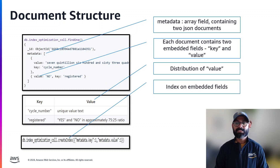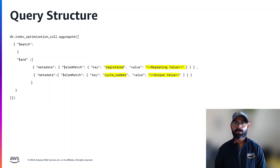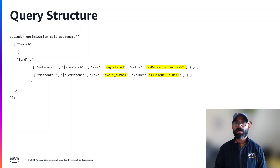We have created a compound index on the embedded fields. This is the query structure we are looking at — we need to find documents that match two conditions with the AND operator. We have also used $elemMatch because we need it to query embedded fields. When we are using 'registered', the value is a repeating value. However, when we use 'cycle number', it's a unique value, and we are going to use a combination of both.